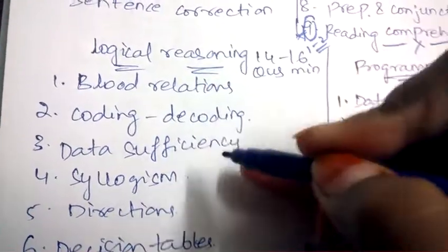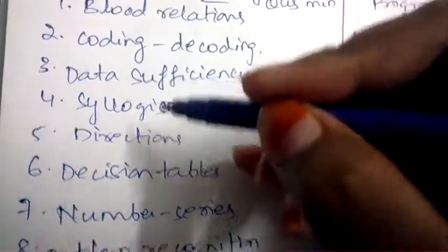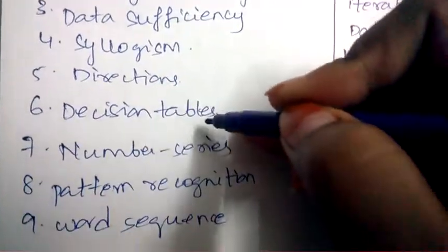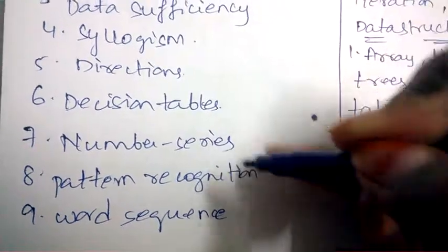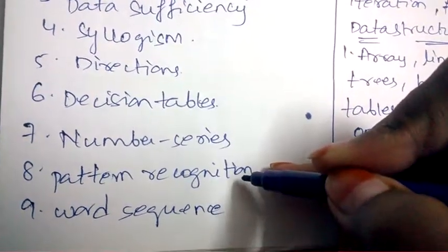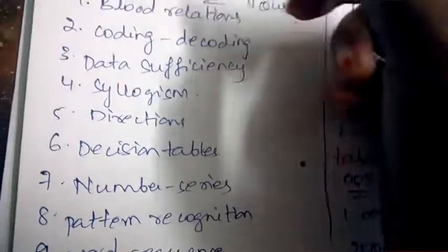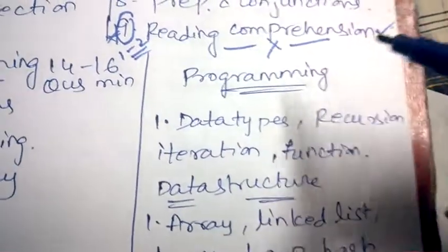The topics are blood relations, coding and decoding, data sufficiency, syllogism, directions, decision tables, number series, word sequence, and pattern recognition. All are very important. Concentrate on each and every topic. Coming to off-campus, they'll be also asking the programming questions.